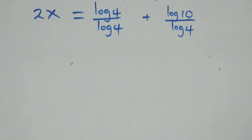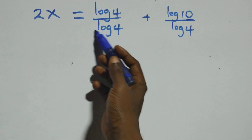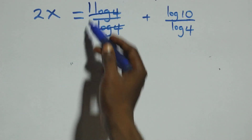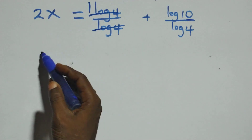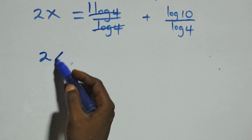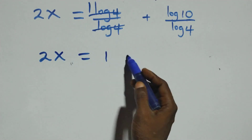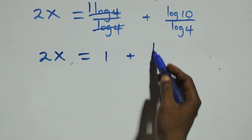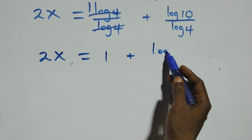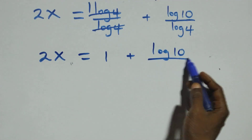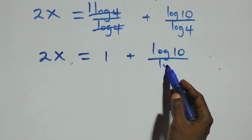In the next step, log 4 over log 4 cancels to give 1, which implies 2x equals 1 plus log 10 over log 4.